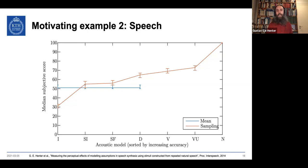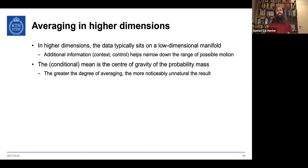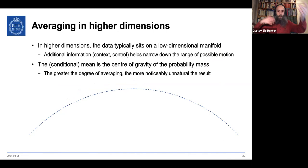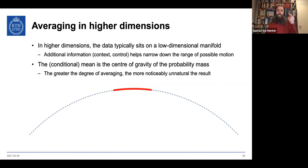We pointed out a number of things that needed to be resolved for speech synthesis to advance, and two years later DeepMind published WaveNet, which addressed those exact points — sampling from the model and getting better results. Geometrically: in high dimensions, most poses are unnatural, and data sits on a low-dimensional manifold. The conditional mean is the center of gravity of that segment, which may be acceptable when uncertainty is low.